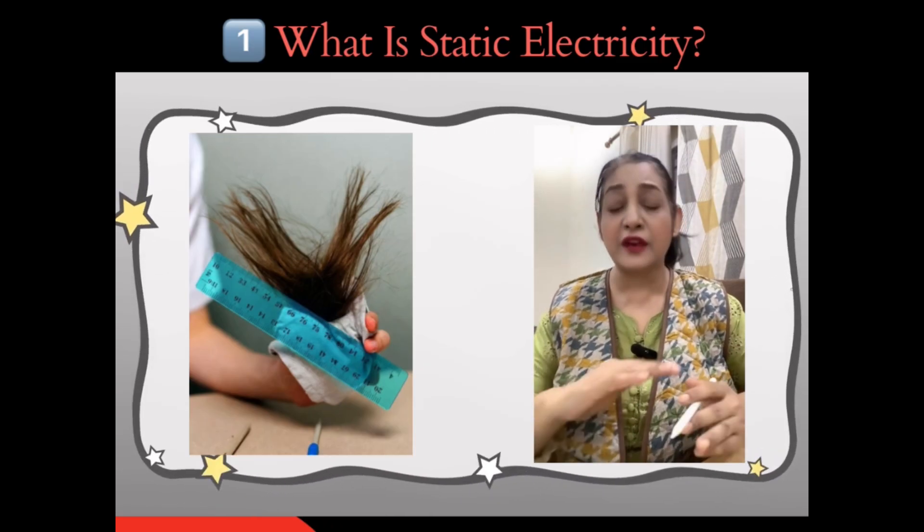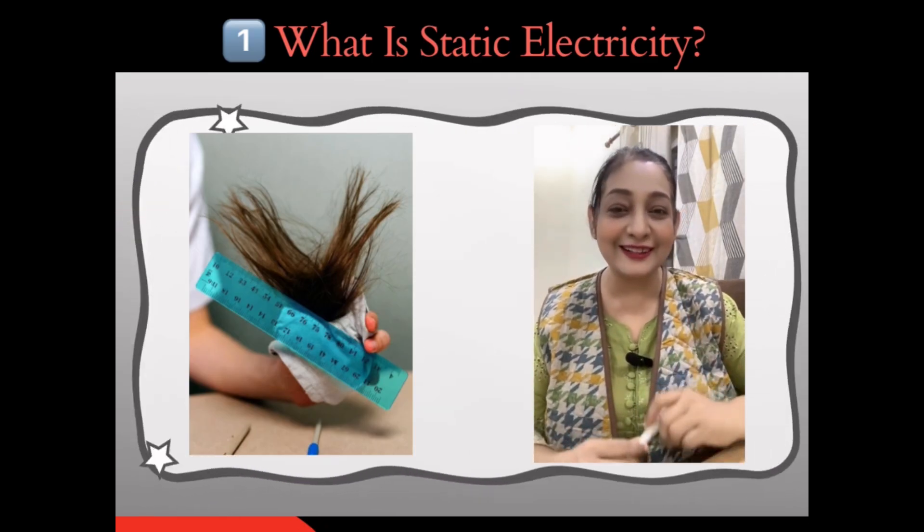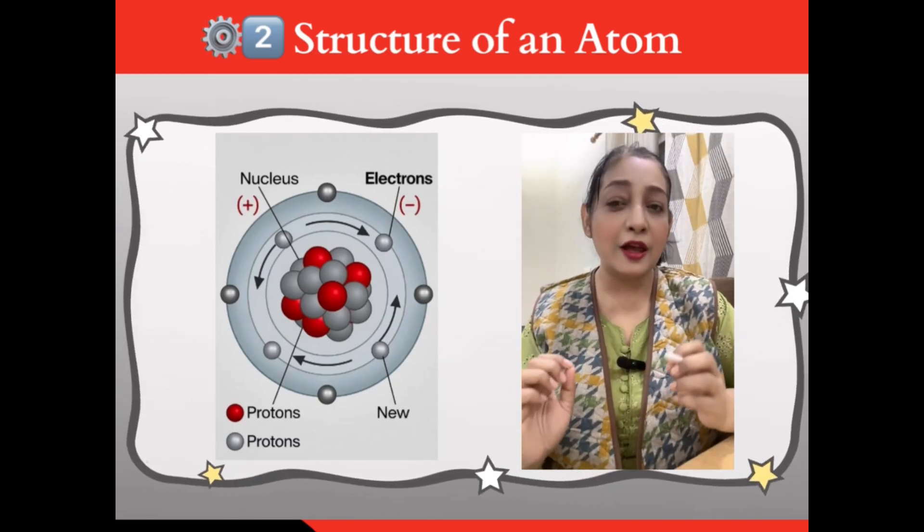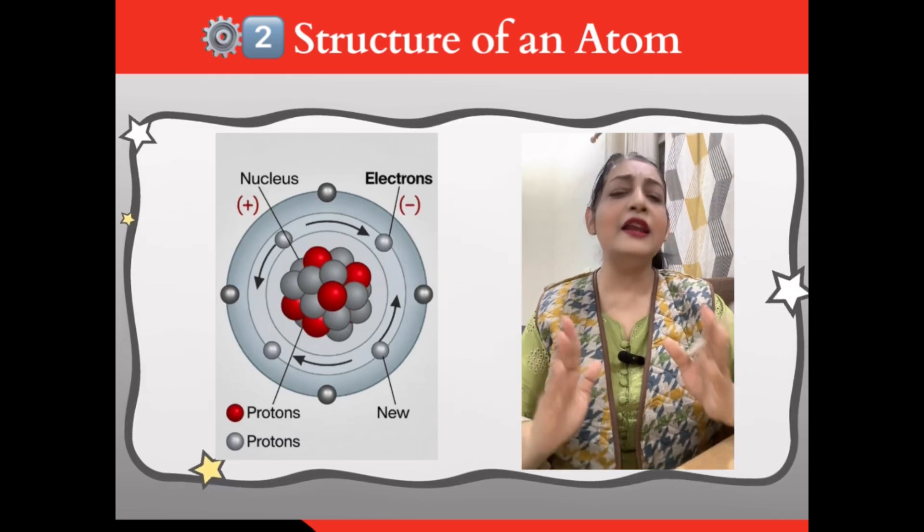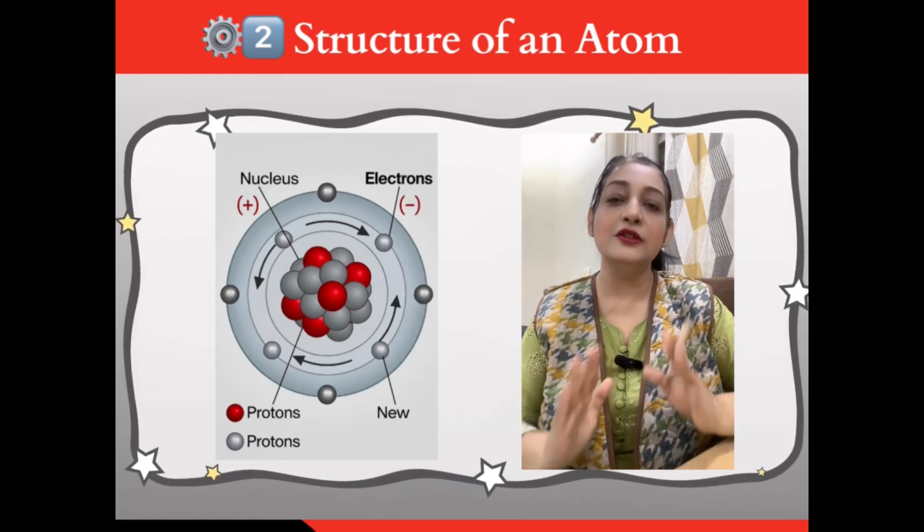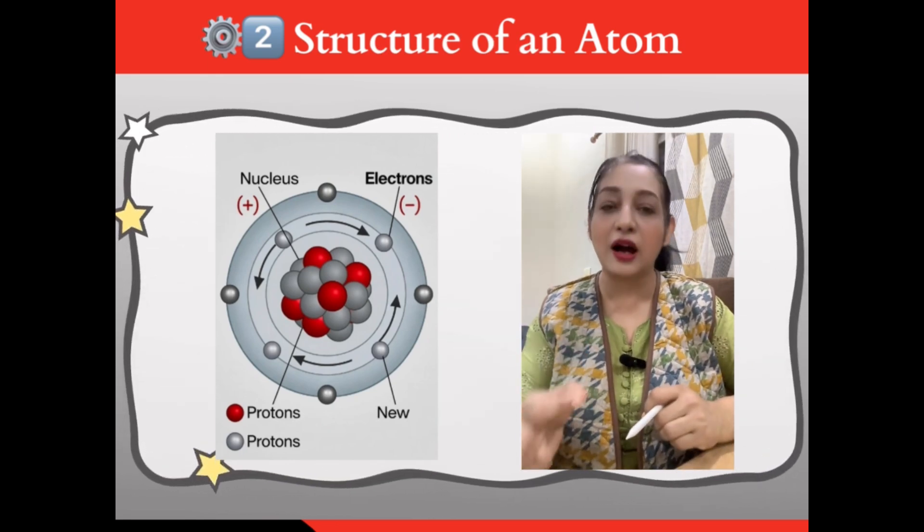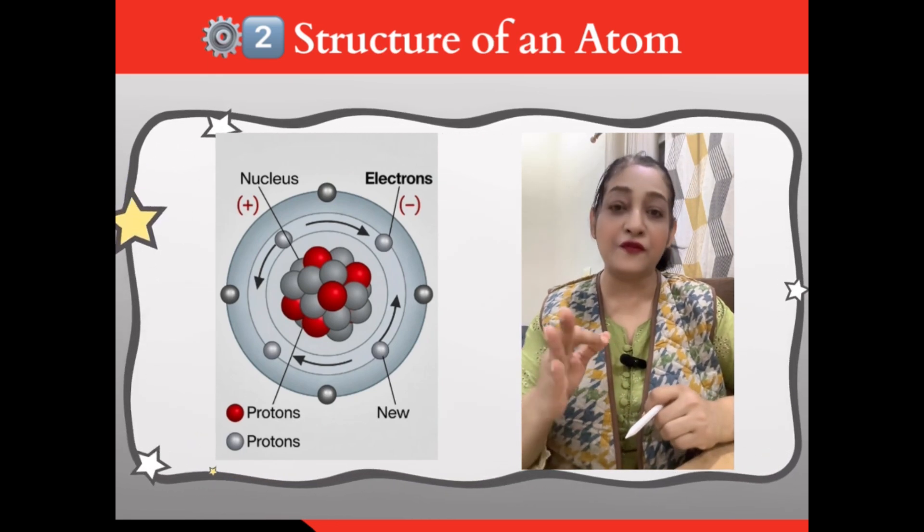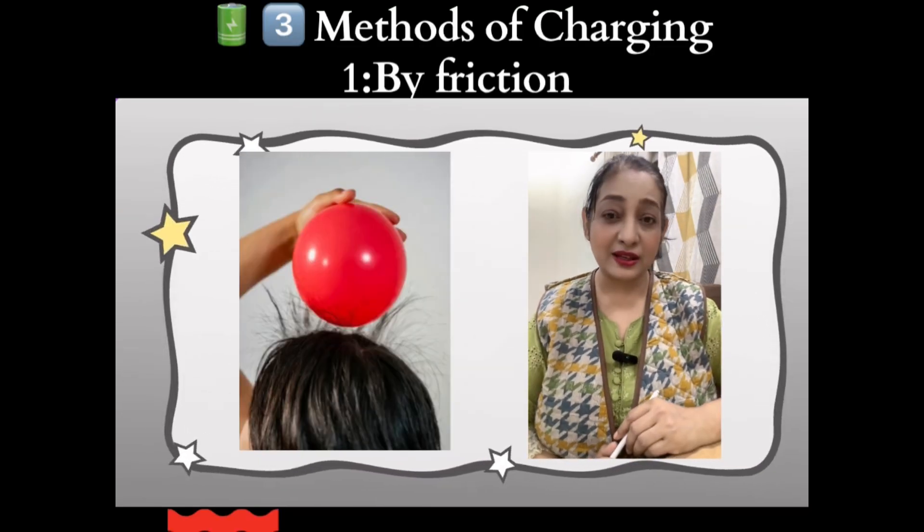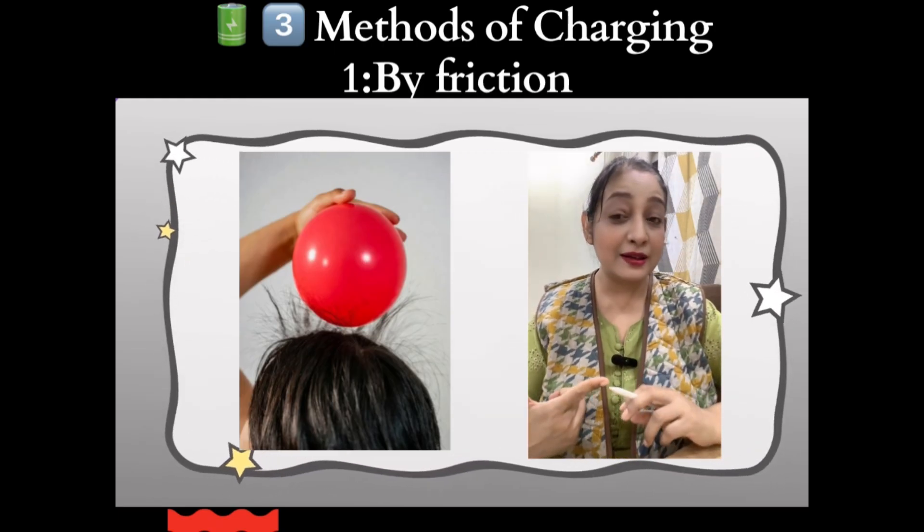Now the structure of an atom, quick recall: protons are positively charged, electrons are negatively charged, neutrons are neutral with no charge. Only electrons move during charging, protons stay fixed in the nucleus. Methods of charging: there are three main ways to charge an object.